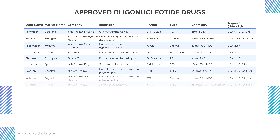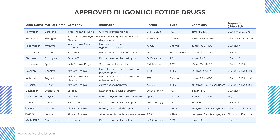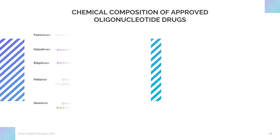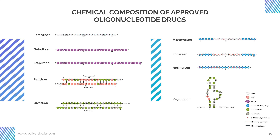From the first approved ASO drug fomivirsen in 1998 to the latest approved casimersen in 2021, 15 oligonucleotide drugs have been approved by the US Food and Drug Administration and the European Medicines Agency. Most of them are ASOs, with four designed to treat Duchenne muscular dystrophy. The target tissues for these approved nucleic acid medicines span a variety of organs including the liver, central nervous system, and skeletal muscles, which differ significantly in their biology and ease of access from the systemic circulation. This slide presents the chemistry diagrams of approved oligonucleotide drugs, showing nucleobase sequences, base pairs, chemical modifications, and high-order structures.